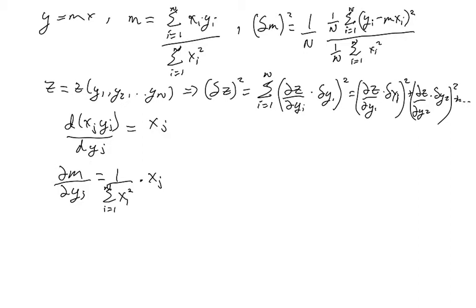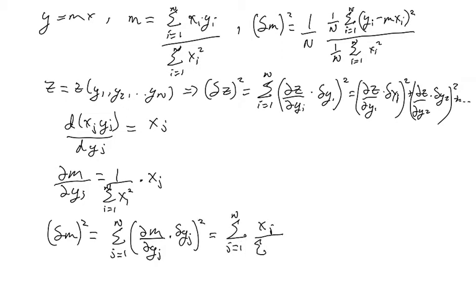Okay, so expanding this into our full formula now, the uncertainty in m squared is going to go as, and this is using this formula over here, it's going to go as the sum from j equals 1 to n of this derivative with respect to yj times the uncertainty in yj. And then subbing that in is going to give us the sum from j equals 1 to n of xj divided by the sum from i equals 1 to n xi squared, and that whole term is squared, and then times the uncertainty squared. Okay, next thing you have to do is deal with this term here, and I'm going to go to a new page to do that.